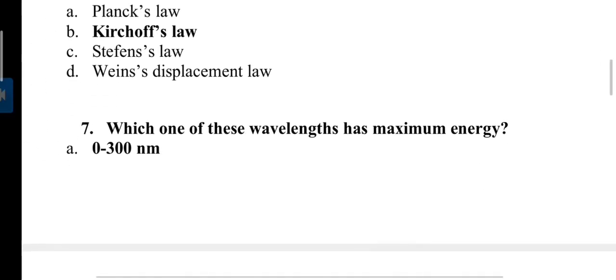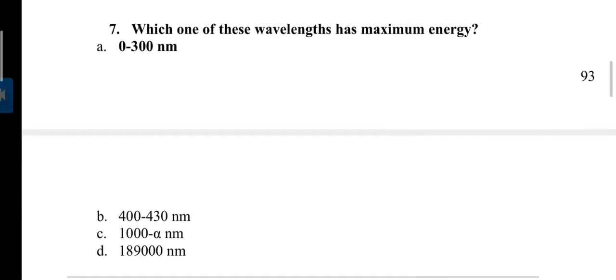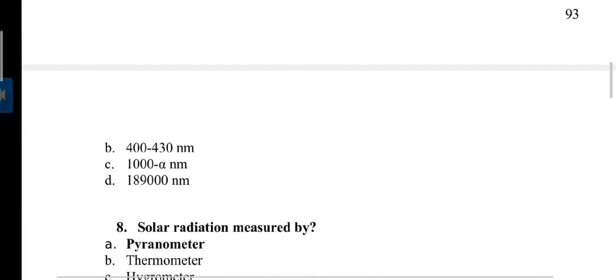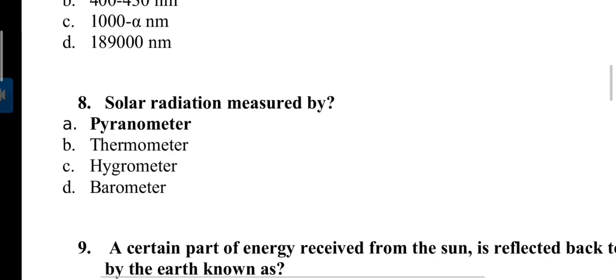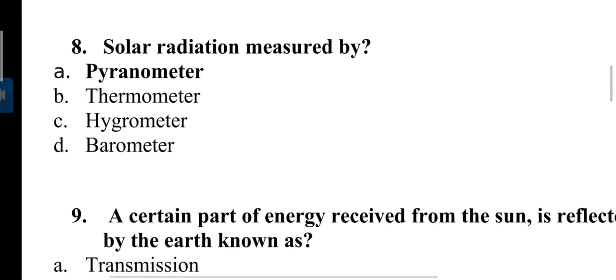Next question: Which one of these wavelengths has maximum energy? Answer is 0 to 300 nanometers. The basic concept is: as wavelength decreases, energy increases. So we choose here lowest wavelength 0 to 300 nanometers, and 1 nanometer is equal to 10 raised to the power minus 9 meters. Thermometer is used for temperature measurement, hygrometer is used for humidity measurement, and barometer is used for atmospheric pressure measurement.